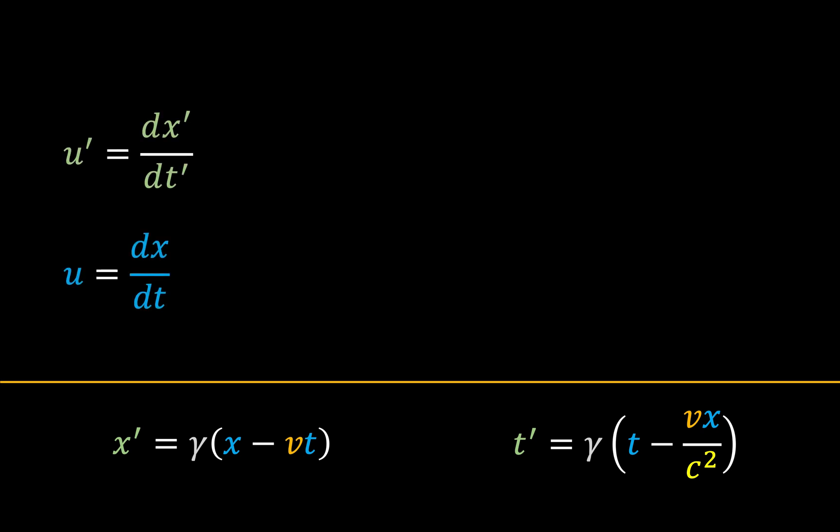So first of all, we know that the velocity u is equal to the derivative of position over time, so now we just have to find an expression for u' given values for u and v.